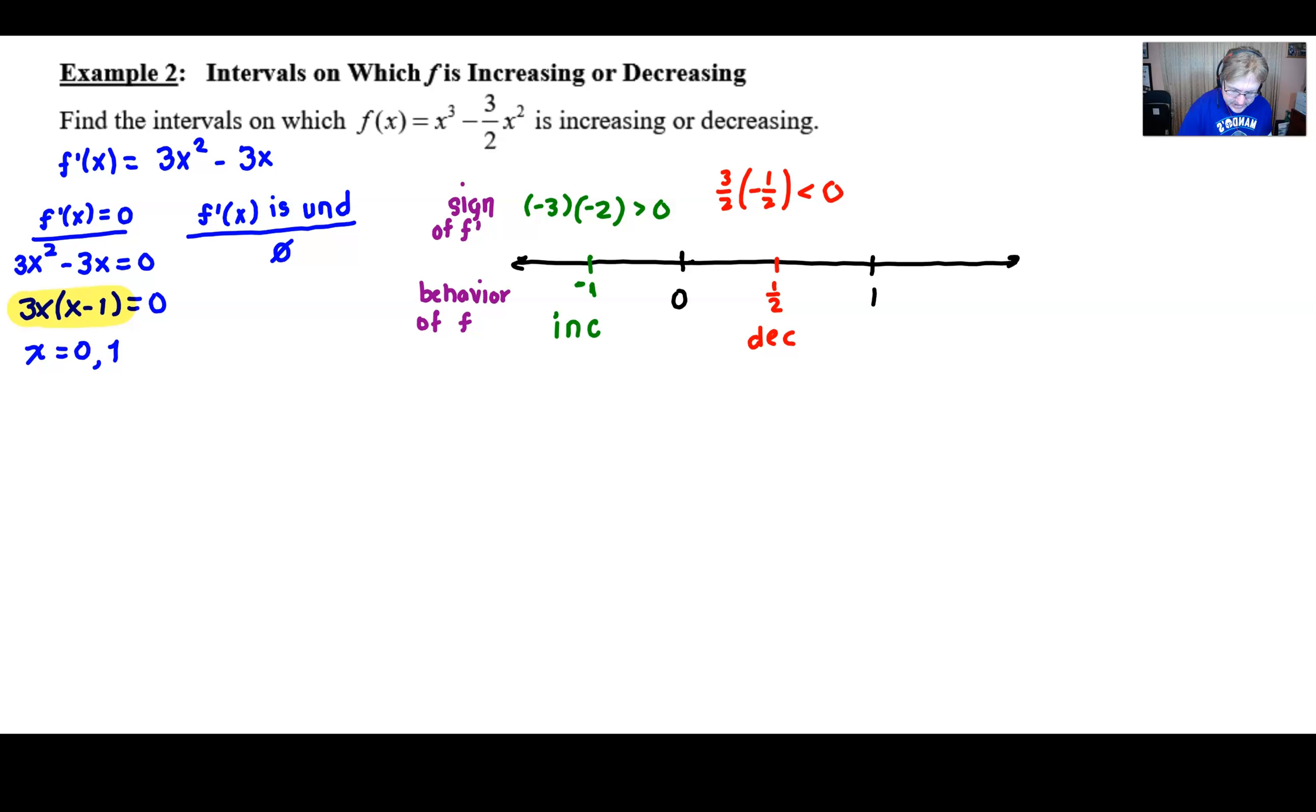One more interval to check, it looks like, between 1 and infinity. Lots of things to choose from. I'm going to go with a positive 2. Plugging in 2 for x in that highlighted expression gives you 3 times 2, which is 6. And then 2 minus 1 is 1. And of course, that's a positive result. And so my final behavior is going to be increasing.